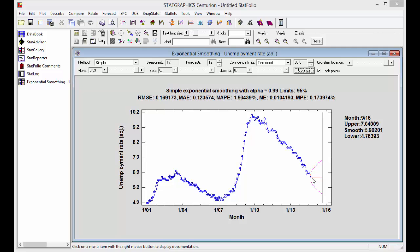You'll notice, however, that while the smoother tracks the data better than it did before, the forecast function is horizontal. One of the limitations of simple exponential smoothing is that the forecast function is horizontal, which doesn't make a lot of sense given the behavior of this particular time series.